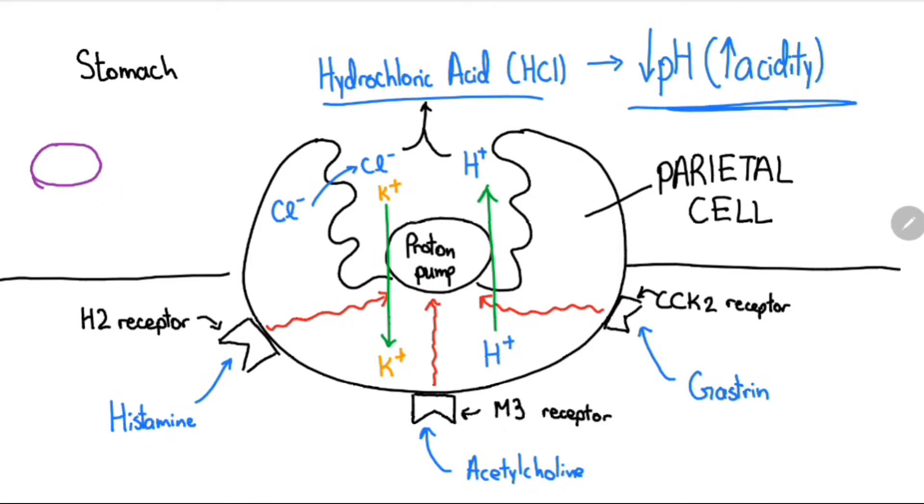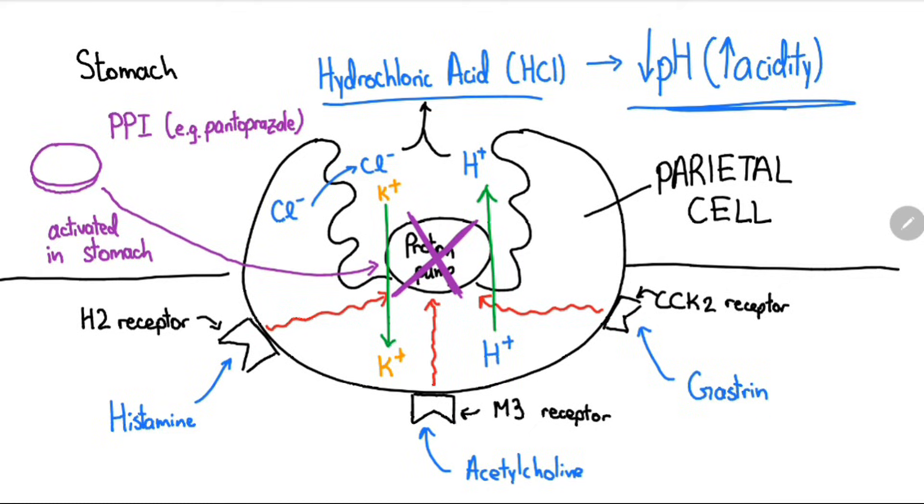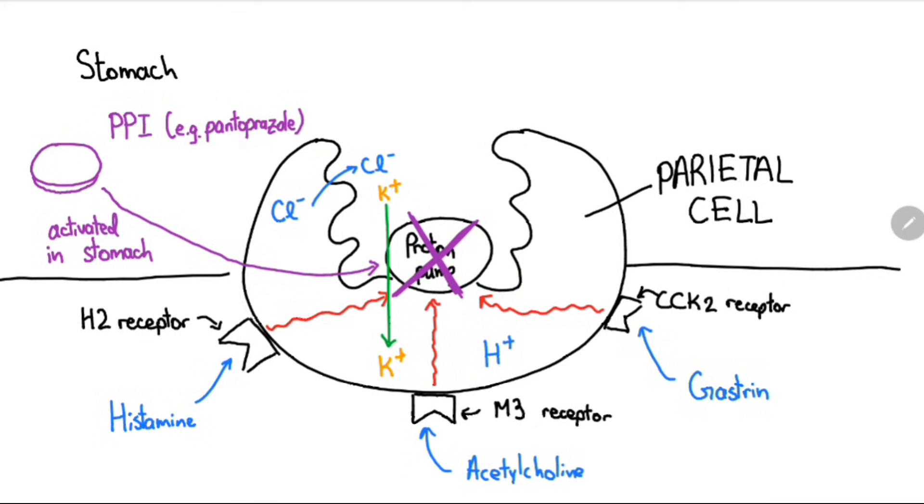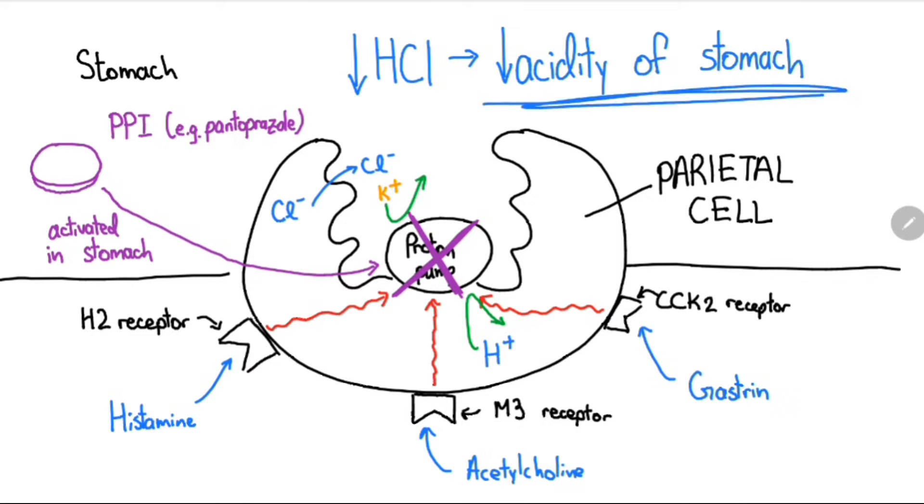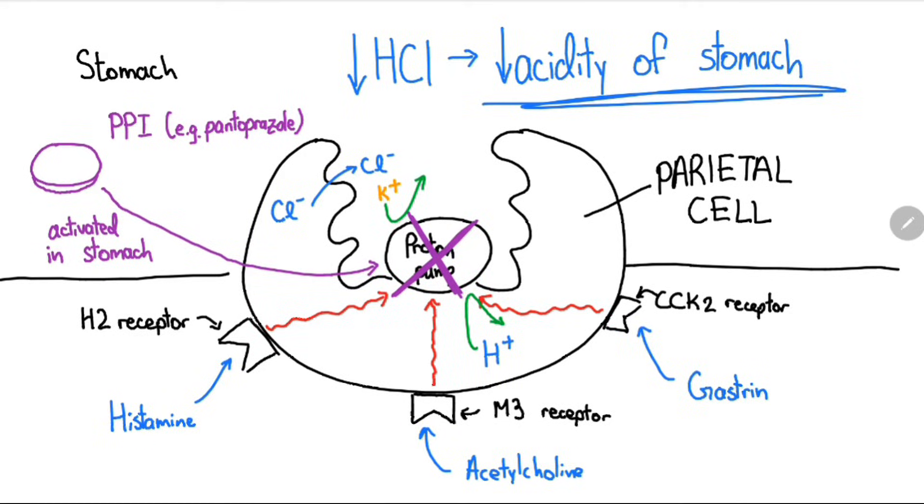Proton pump inhibitors are pro-drugs activated by the acidic environment of our stomach. These drugs bind to the proton pumps and prevent the release of protons, reducing hydrochloric acid production. This results in reduced acid reflux symptoms and enables healing of esophagitis and GI ulcers.